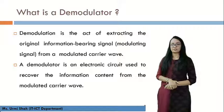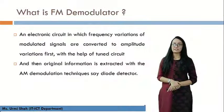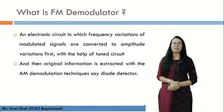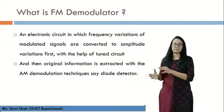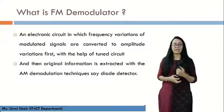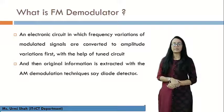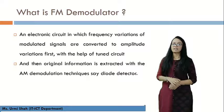Now, what are the types of demodulator circuits used in frequency modulation? An FM demodulator circuit is an electronic circuit in which the frequency variations of the modulated signal are first converted into amplitude variations. Then, with the help of a tuned circuit, the signal is originally retrieved using AM demodulation techniques like a diode detector. This is known as the FM demodulation process.